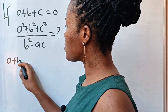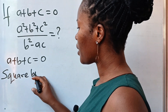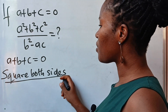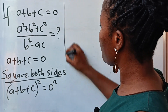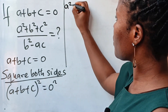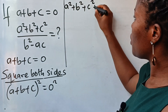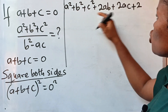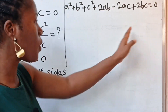So we are told that a plus b plus c is equal to zero. Now let's square both sides. If we do that, we will have a plus b plus c all squared is equal to zero squared. Now a plus b plus c squared is a squared plus b squared plus c squared plus 2ab plus 2ac plus 2bc is equal to zero. So this is what we have when we expand this.